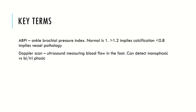We're also going to mention Doppler scans, which is an ultrasound measuring the blood flow in the foot using a little probe. It can detect whether the blood flow is monophasic, biphasic, or triphasic. In basic terminology, monophasic is abnormal and implies a clot, whereas bi- and triphasic tend to be normal. You can obviously look up a bit more about those if you want to.